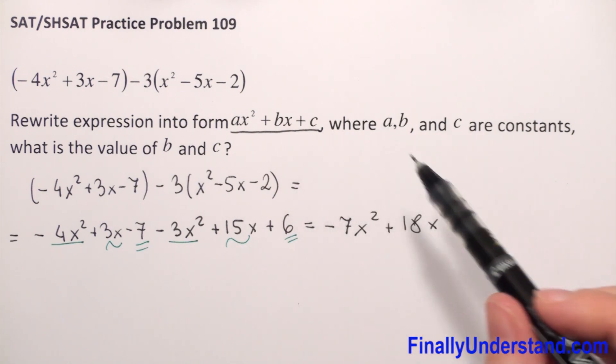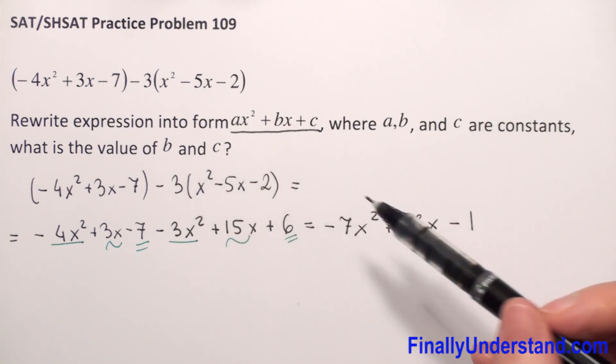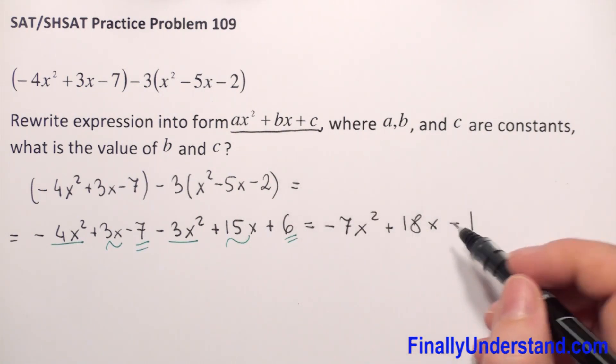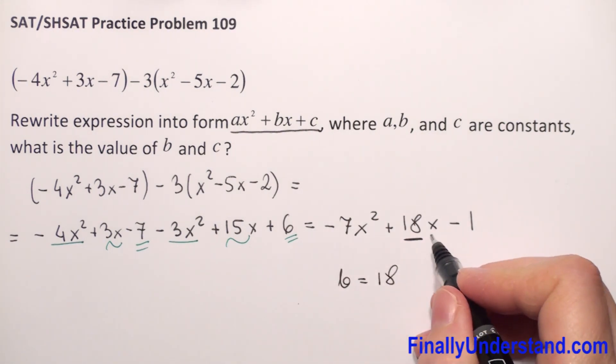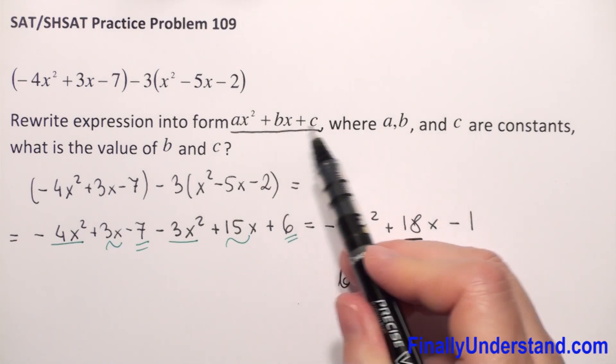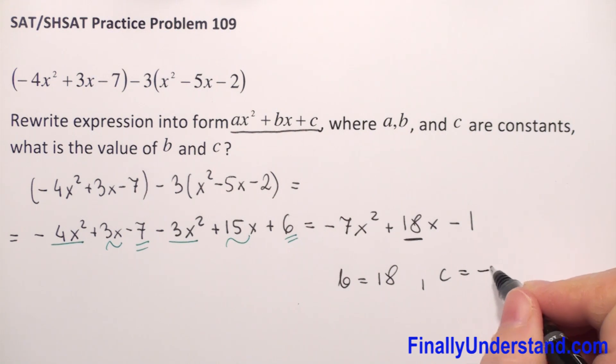Now when we rewrite our expression into form ax squared plus bx plus c, we can read the value of b and c. b is the coefficient before x, and c is constant. So let me write this: b is equal to 18, coefficient before x. c is constant, so c in our example is negative 1.